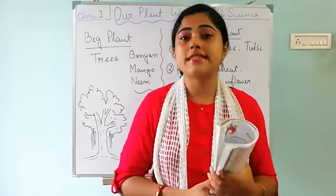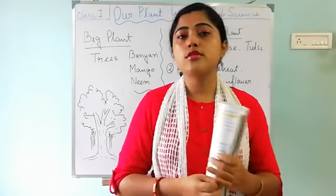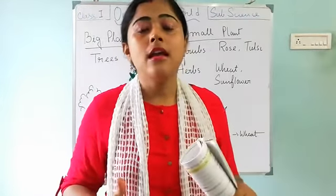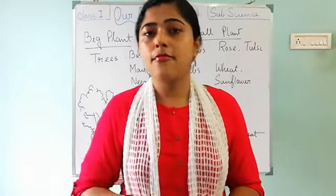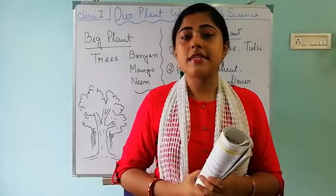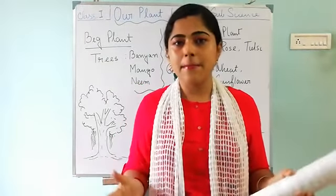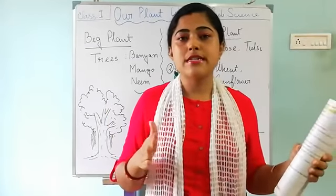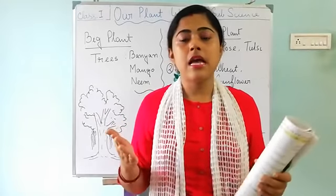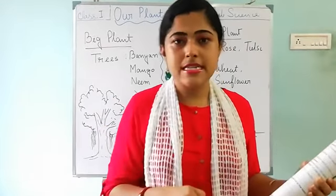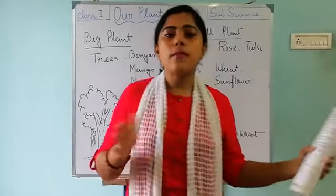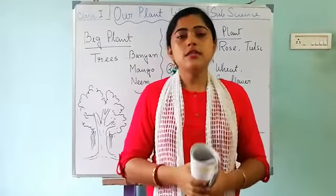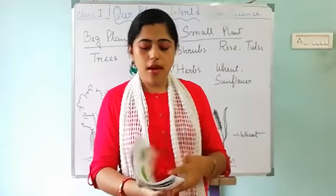First of all, you have to know what the plant world is. You know where we can see all those plants. There are various types of plants and we can see them in forests also. Plant world means we have to learn about every plant — those big trees and small trees which we can see outside our house, on our rooftop, and those which we plant in a tub. Their types and examples — everything we have to learn. That is called the plant world. First of all, see the book.